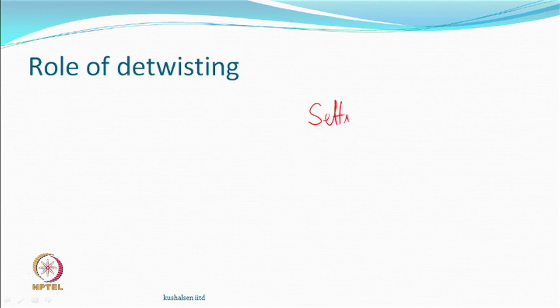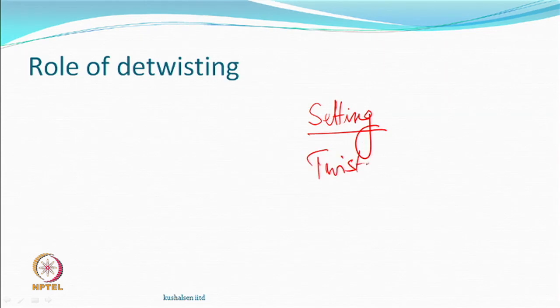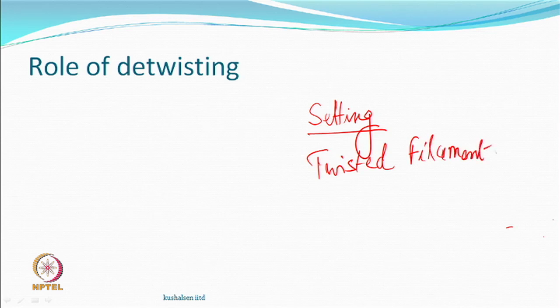Did we discuss the role of de-twisting? What was the role of de-twisting? Can you tell me why de-twisting is so important? After setting, you get a twisted filament yarn, and this yarn does not have a tendency to untwist.